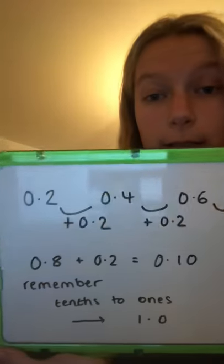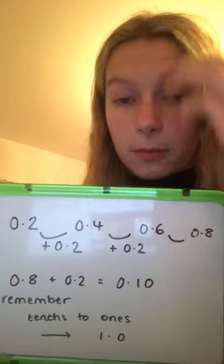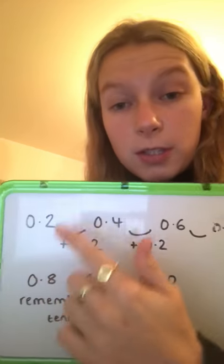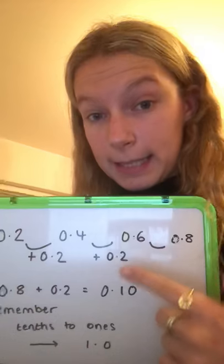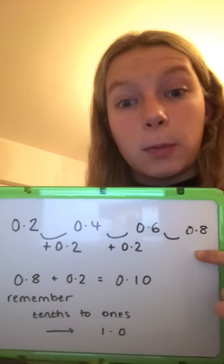In this question, we are looking at a sequence which goes from 0.2 to adding 0.2 and keep going along. 0.2 and 0.2 is 0.4, add 0.2, 0.6, add 0.2, 0.8. Now when we get to 0.8, this is when things get a little bit more difficult.